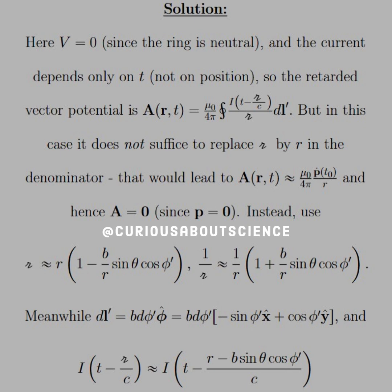Meanwhile, what we see here is that DL prime is just equal to B D phi prime pointing in the phi direction, so we're staying in the x, y plane. But the phi hat direction can be broken down into x and y coordinates. So that's where we get B D phi prime, minus sine phi prime x hat plus cosine phi prime y hat. Again, go back to unit vector tables. We have that in the back of the book as well.